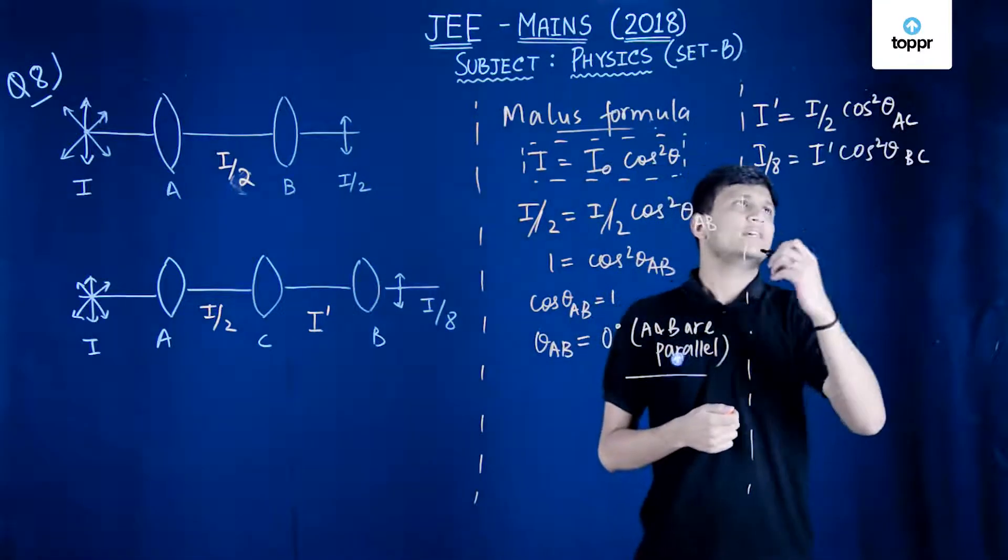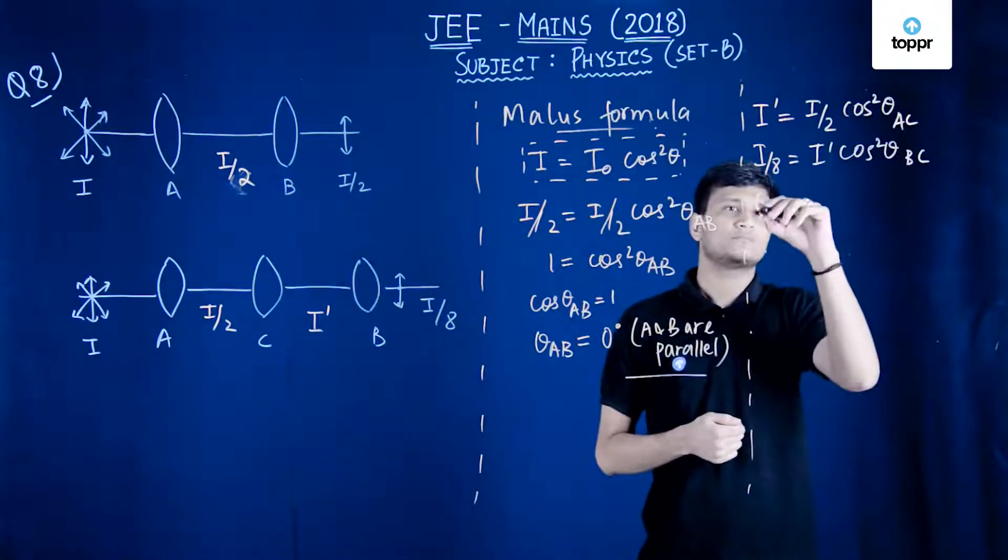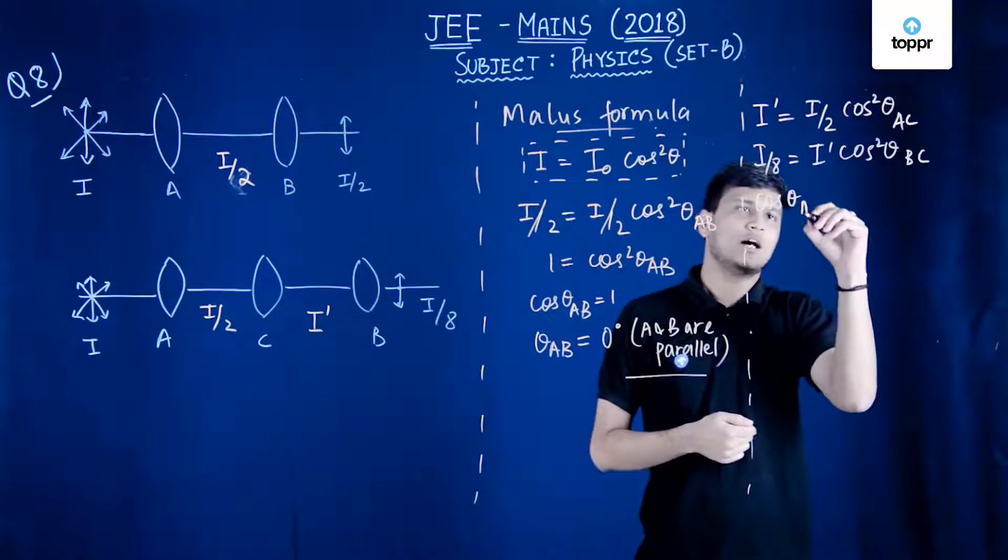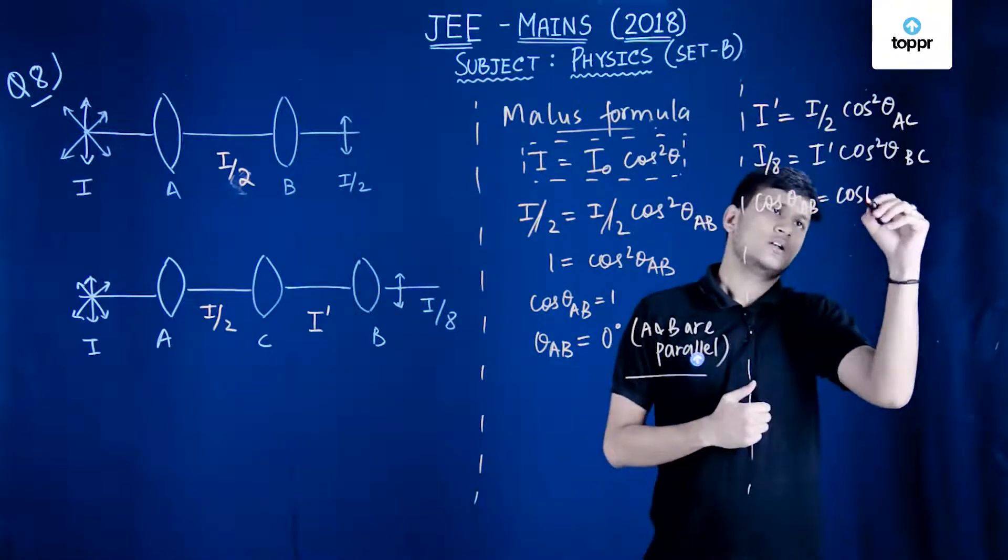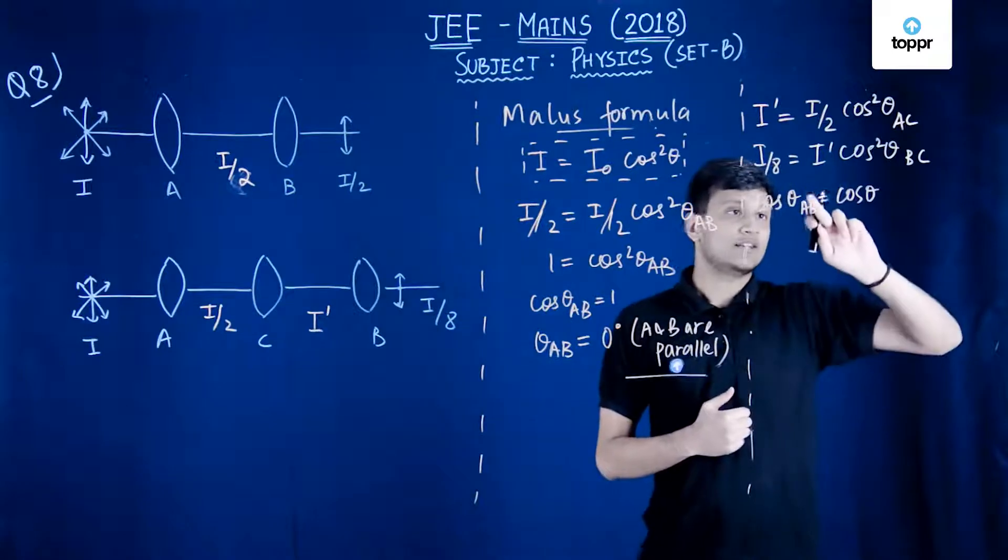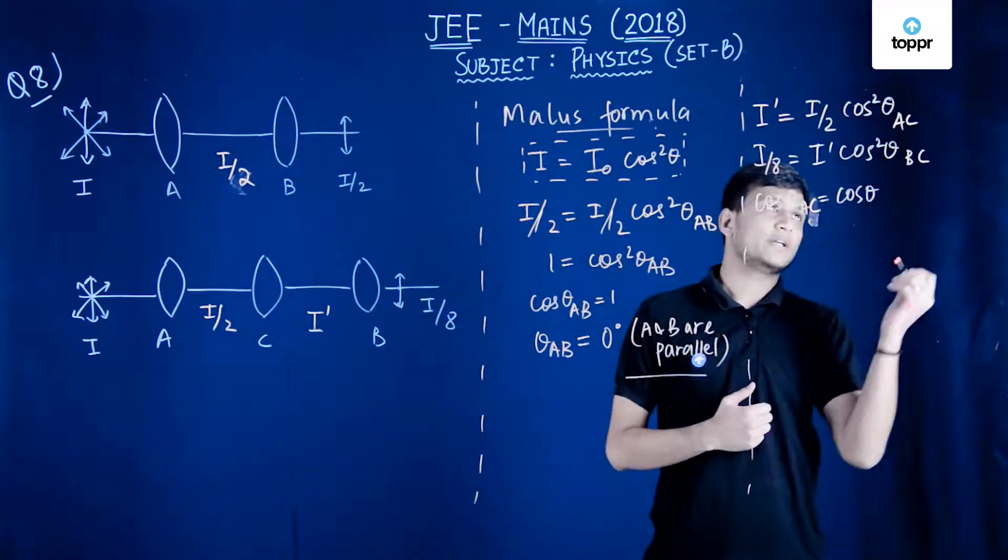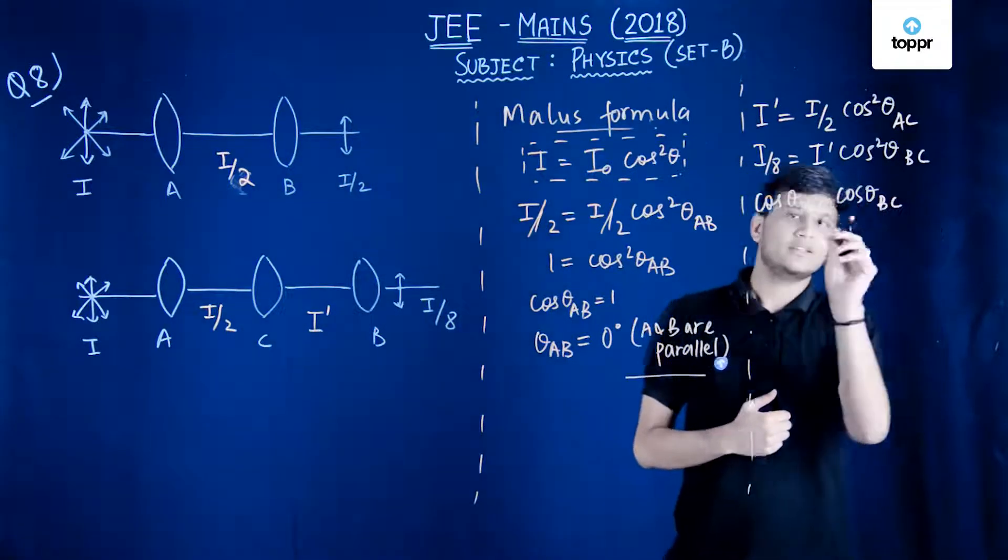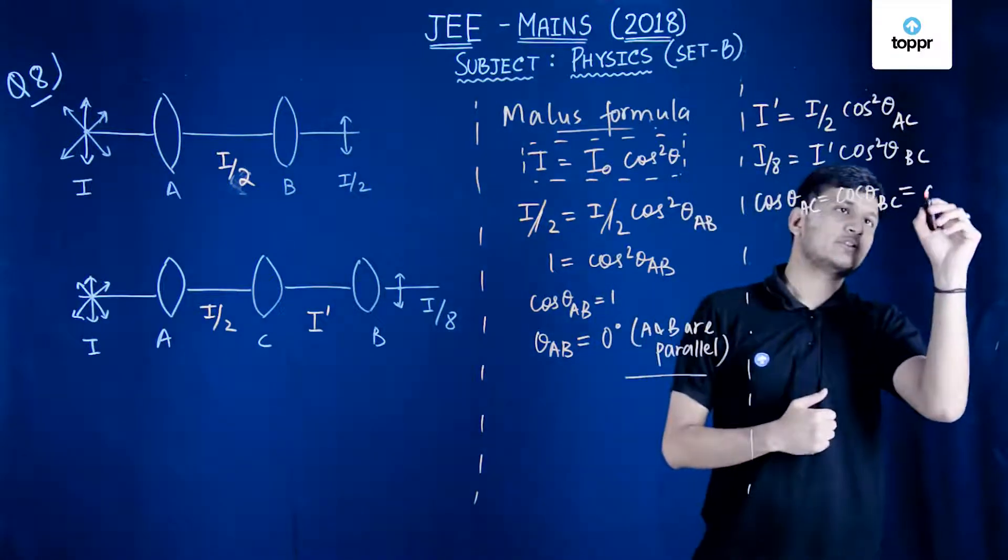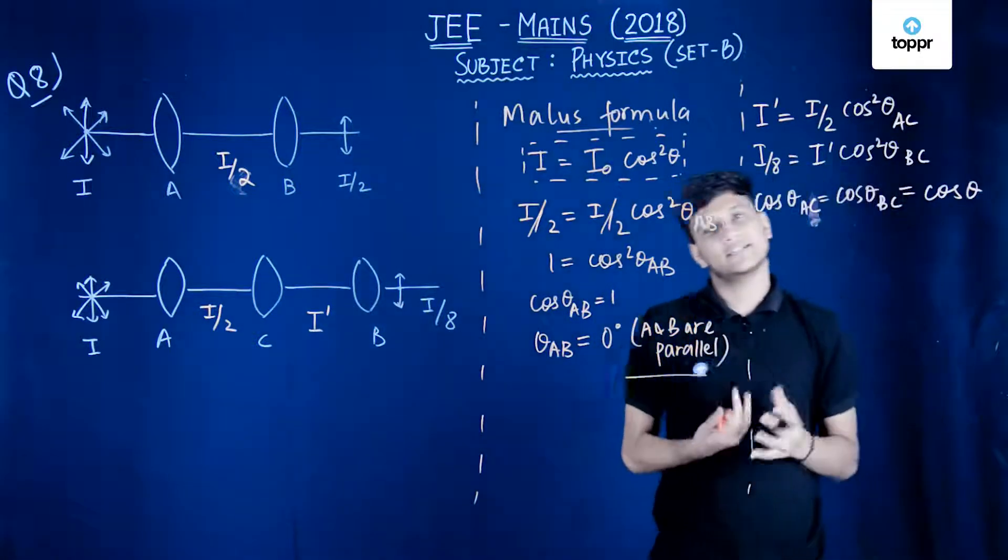Let us say that both of them are some cos theta. So cos theta AB would be, I'm really sorry, would be equal to cos theta AC, would be equal to cos theta BC, and both of them would be equal to some cos theta.